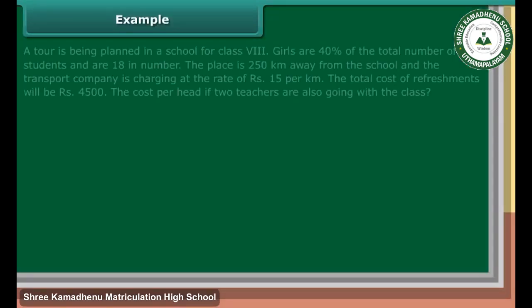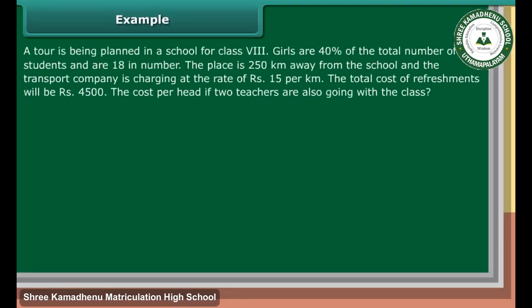Example: A tour is being planned in a school for class 8. Girls are 40% of the total number of students and are 18 in number. The place is 250 km away from this school and the transport company is charging at the rate of Rs. 15 per km. The total cost of the refreshments will be Rs. 4,500. Find the cost per head if two teachers are also going with the class.